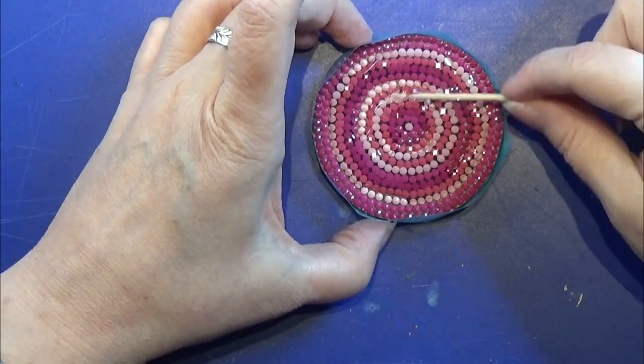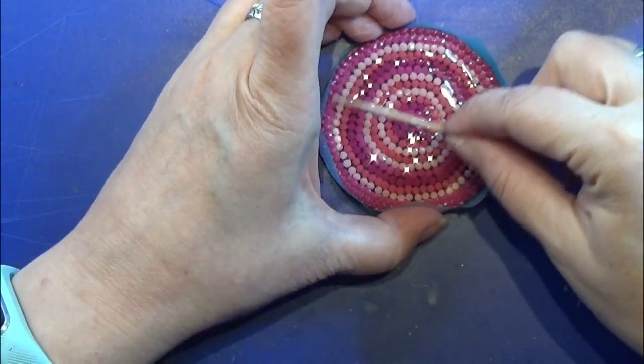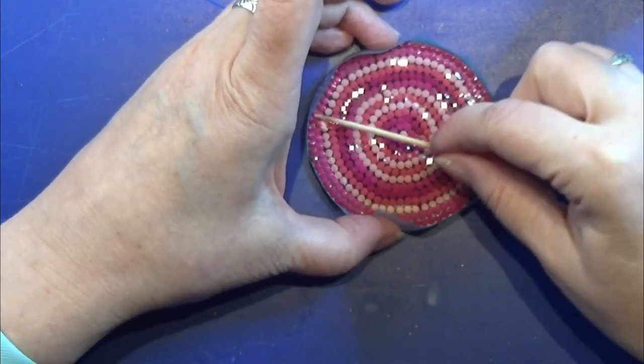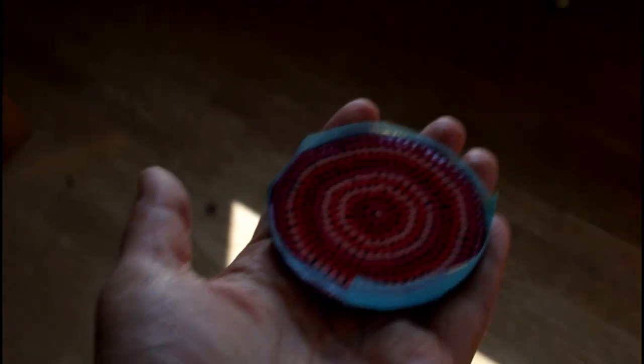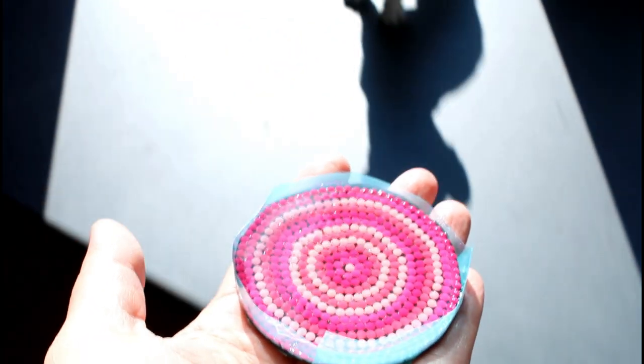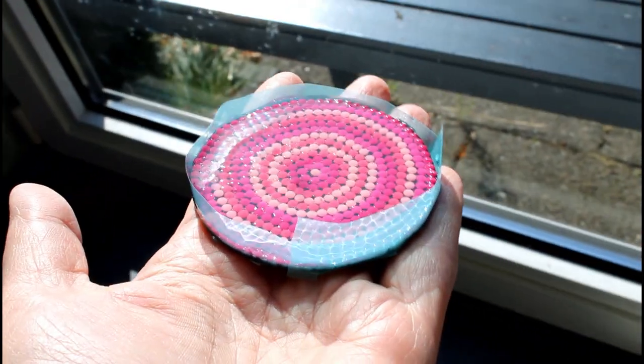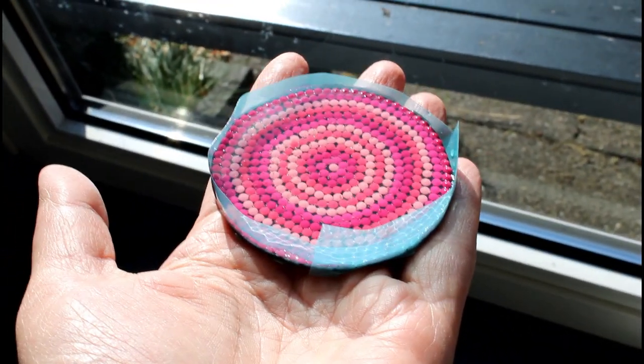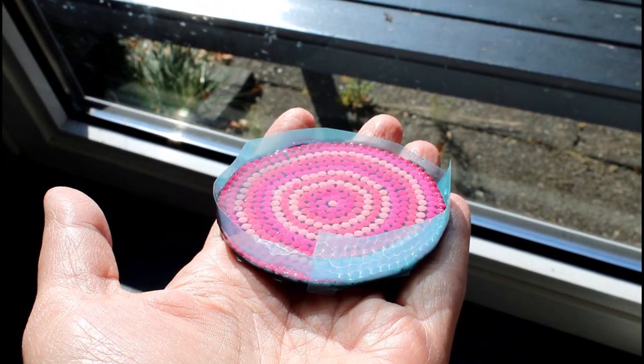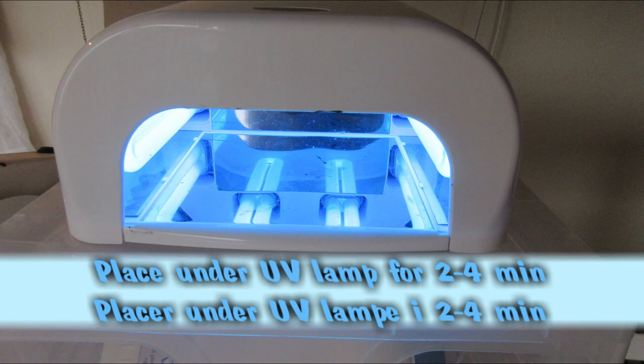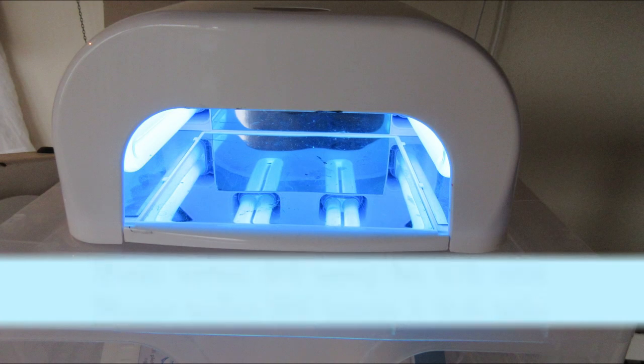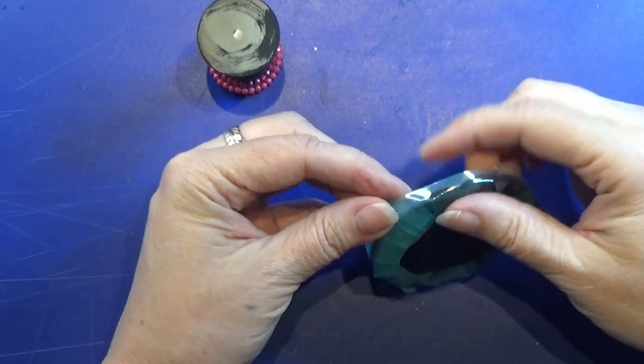When I have a nice even layer of resin I am carefully bringing it to my window and letting the sun do the first work on it. After it is a little more hardened I am using my UV light to harden it all the way through. This way it will not bend at all.